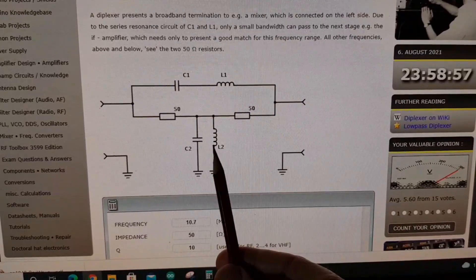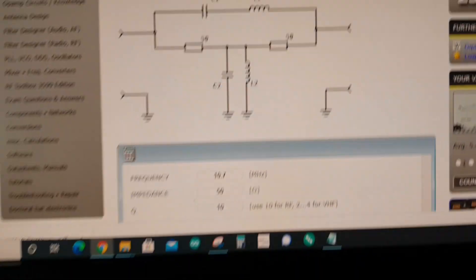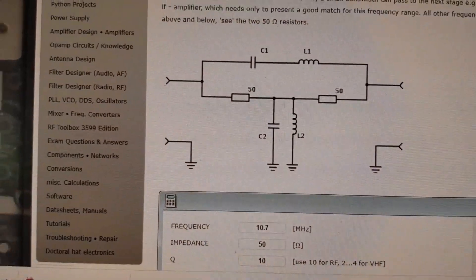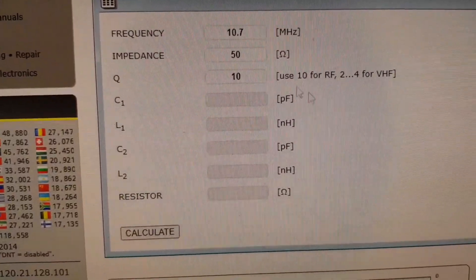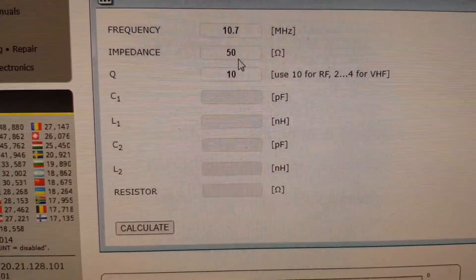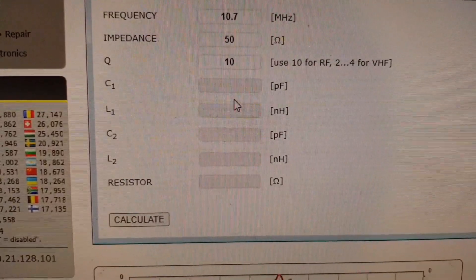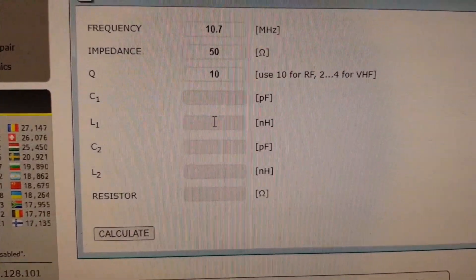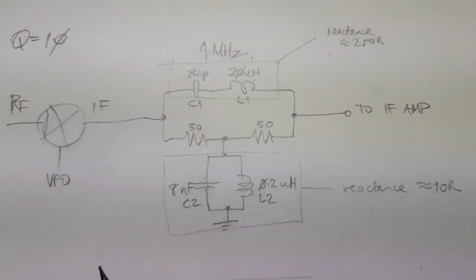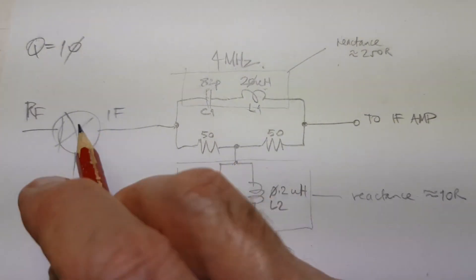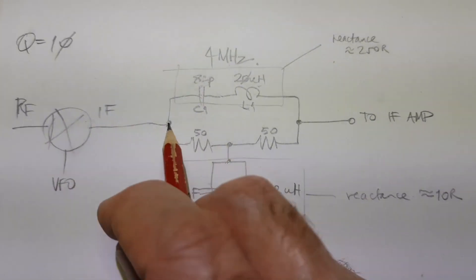The series and the parallel tuned circuits need to be resonated at the intermediate frequency, and there are some really useful calculators, several of them online, that allow you to enter your intermediate frequency, the impedance at either end, and an overall Q factor, and it will calculate the values for you.